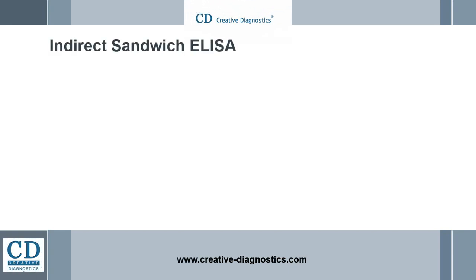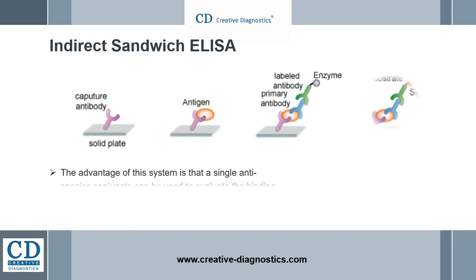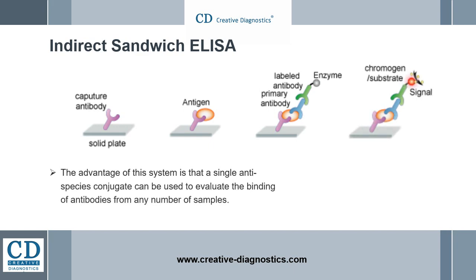For indirect sandwich ELISA, the antigen is detected with a second unlabeled antibody. This antibody is in turn detected using an anti-species enzyme-labeled conjugate. It is essential that the anti-species conjugate does not bind to the capture antibody; therefore, the species in which the capture antibody is produced must be different. The advantage of this system is that a single anti-species conjugate can be used to evaluate the binding of antibodies from any number of samples.